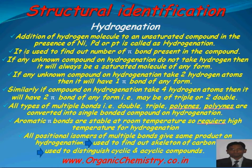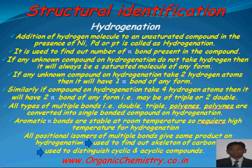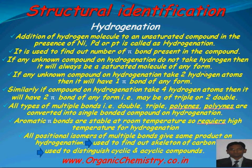Hydrogenation: addition of a hydrogen molecule to an unsaturated compound in the presence of nickel, palladium, or platinum is called hydrogenation. Generally nickel, palladium, or platinum are used because these metals have the property to absorb hydrogen more easily. Hydrogenation is used to find out the number of pi bonds present in the compound. If any unknown compound on hydrogenation does not take hydrogen, then it will always be a saturated molecule — meaning no pi bond is present.